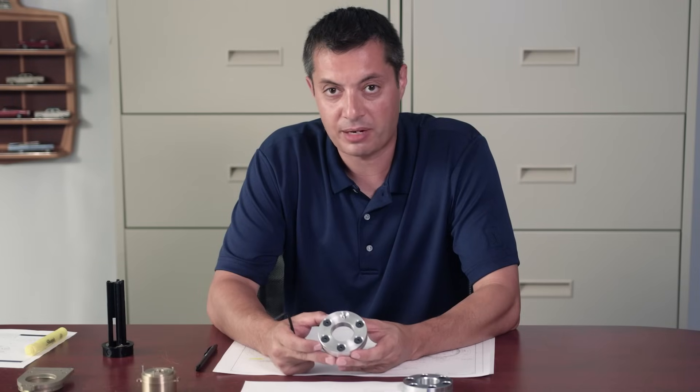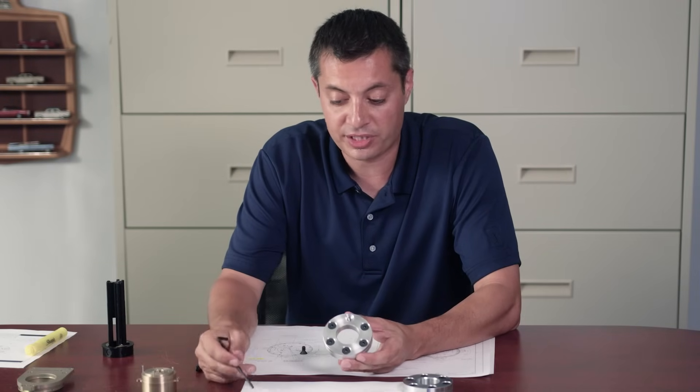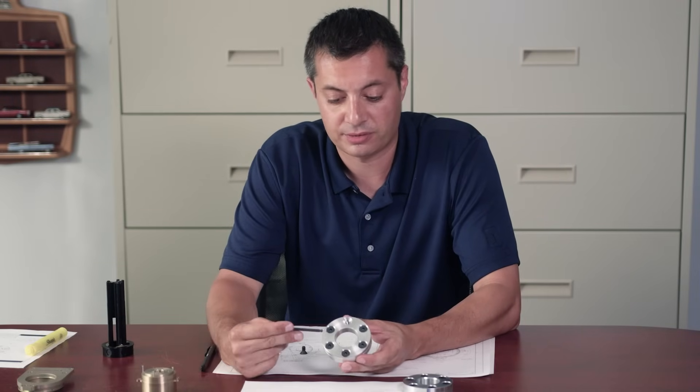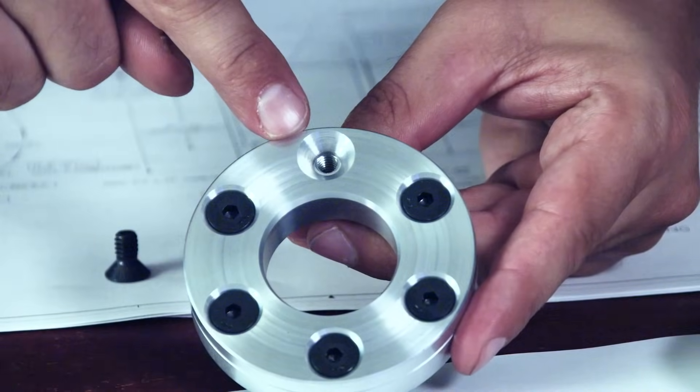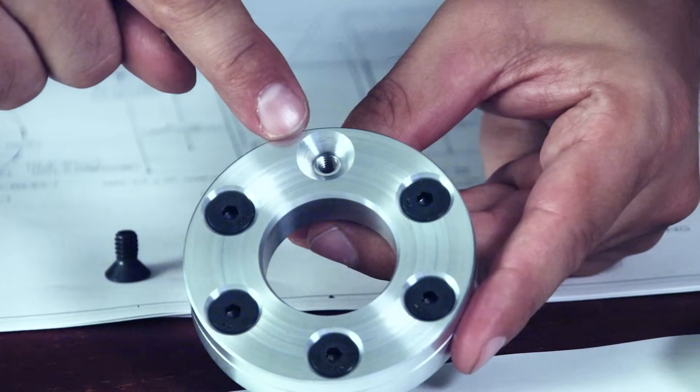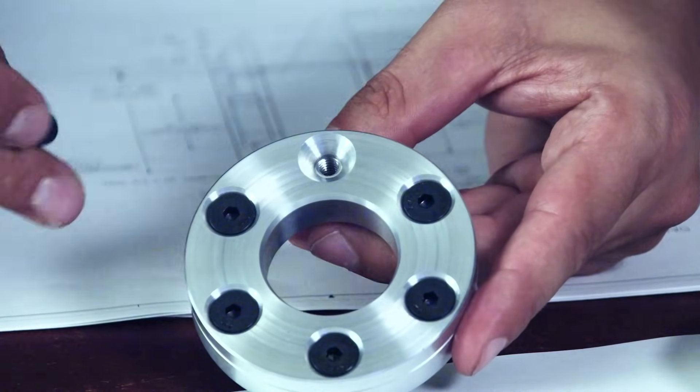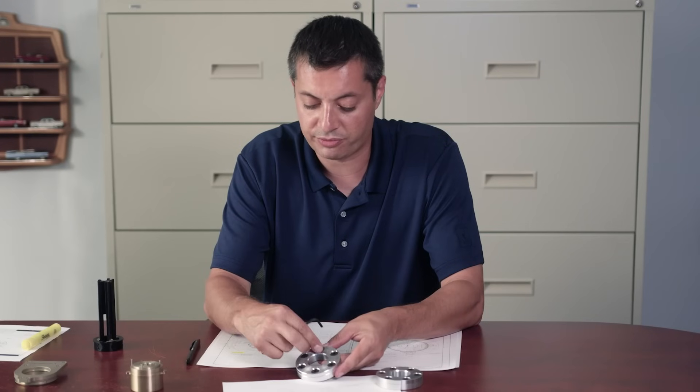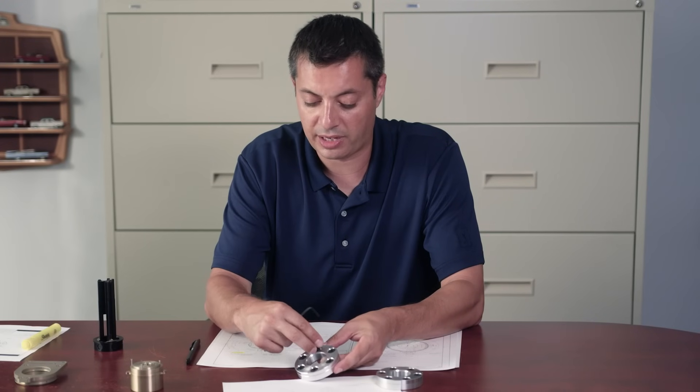Now for test purposes, we made a part that the true position is out of tolerance. So we have our five holes assembled and we see the sixth hole does not line up. When we try to put a screw in it, we can see there's interference and the screw will not accept.